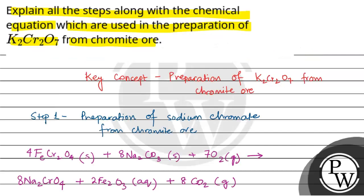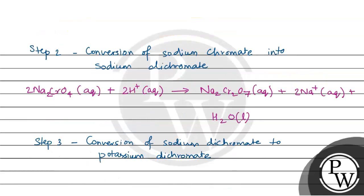The final answer for this question is: Step 1, preparation of sodium chromate from chromite ore. Step 2, conversion of sodium chromate to sodium dichromate. Step 3, conversion of sodium dichromate to potassium dichromate. Hope you have understood well. Best of luck.